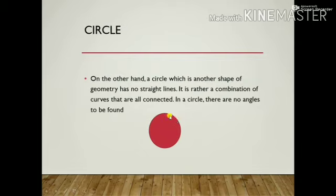Just as square had straight lines, similarly circle has no straight line. It is rather a combination of curves that are all connected. In circle there are no angles. This word angle we will study ahead what is an angle.